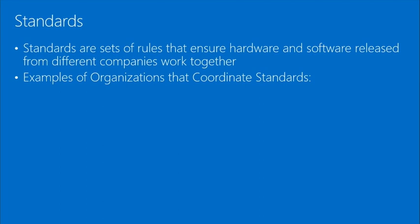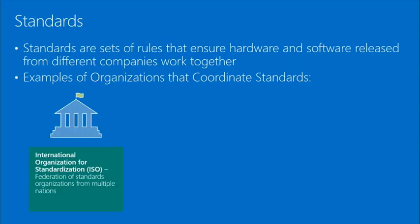Standards. We talked earlier about the English language. Because the English language has rules, that gives us the ability — even having grown up in different parts of the country — to still communicate effectively. Standards allow different manufacturers of hardware and software to create products that intercommunicate. Examples of organizations that coordinate standards include the International Organization for Standards, the ISO.